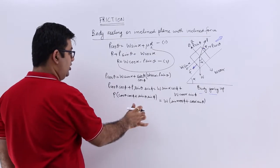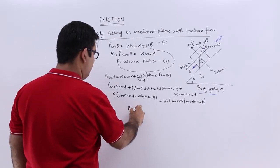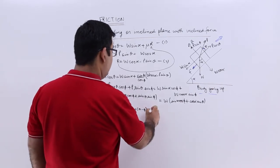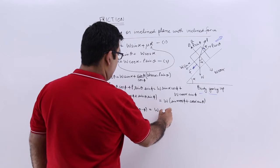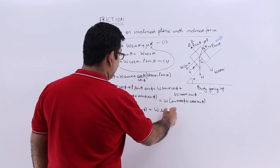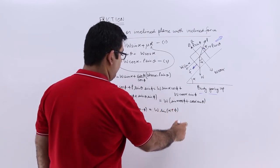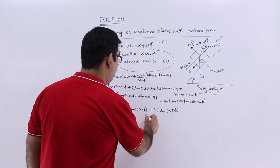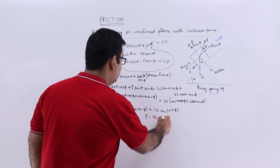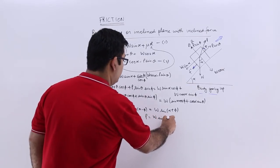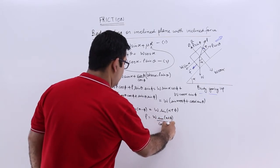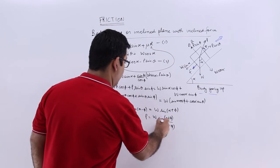From here, the left side is p(cosθ·cosφ + sinθ·sinφ), which equals p·cos(θ − φ). The right side is w(sinα·cosφ + cosα·sinφ), which equals w·sin(α + φ). So we get p·cos(θ − φ) = w·sin(α + φ).